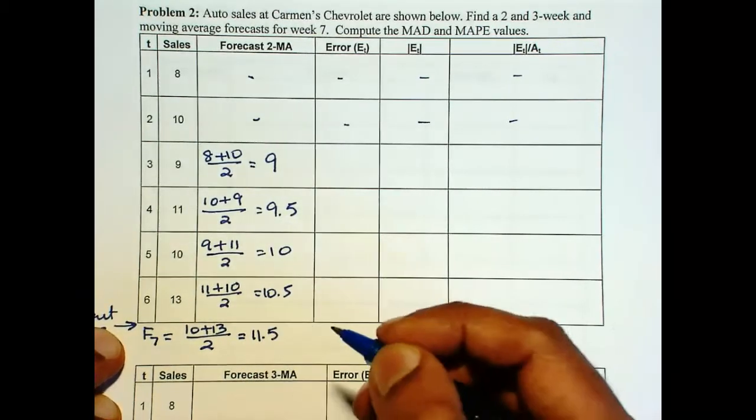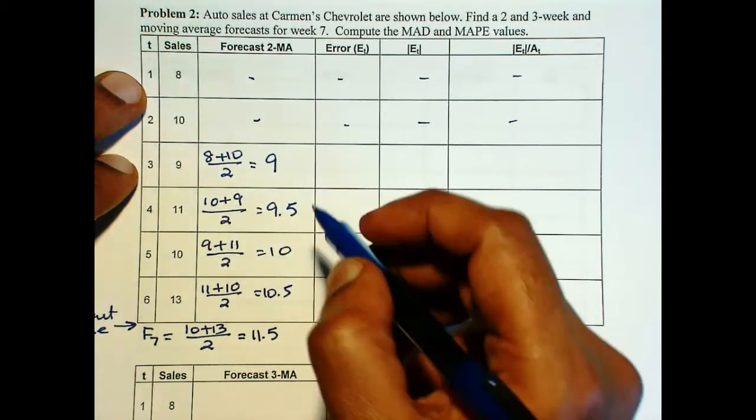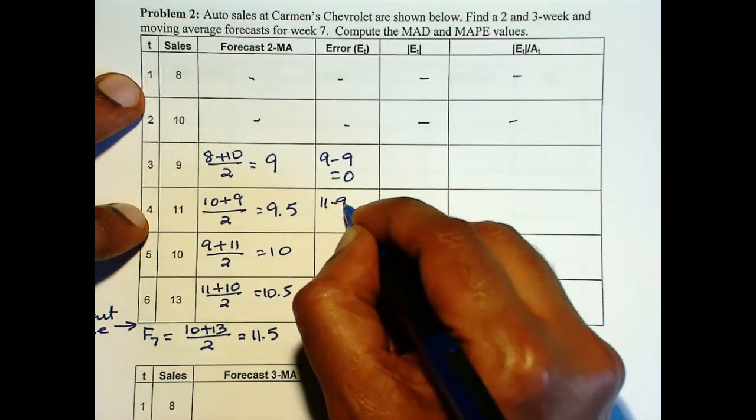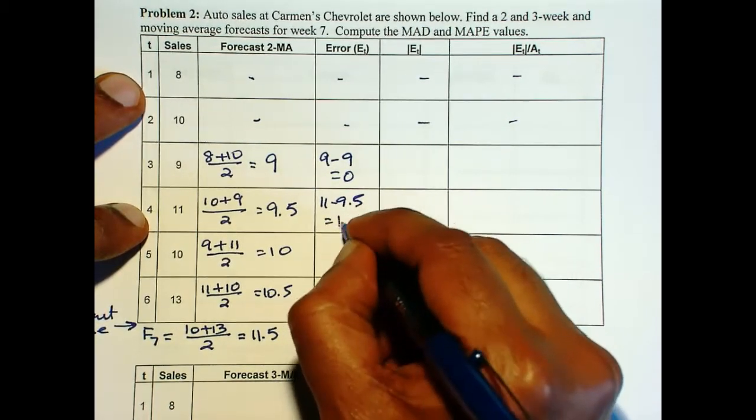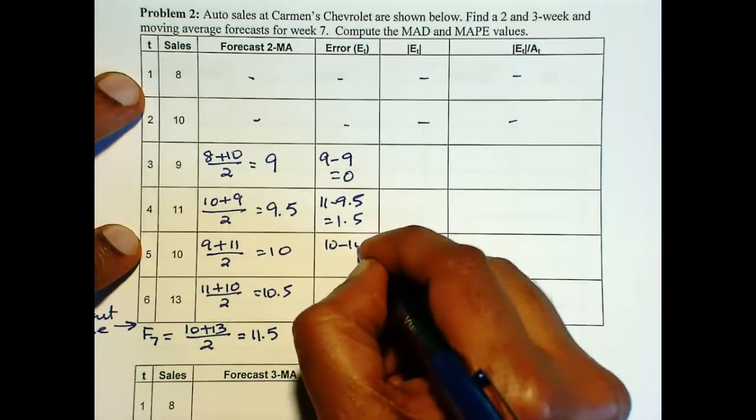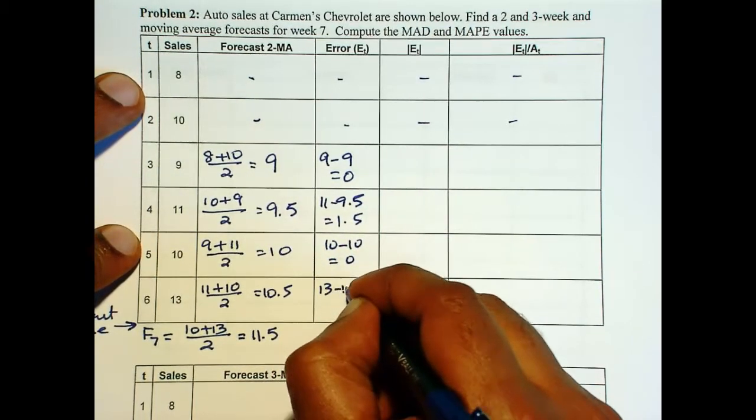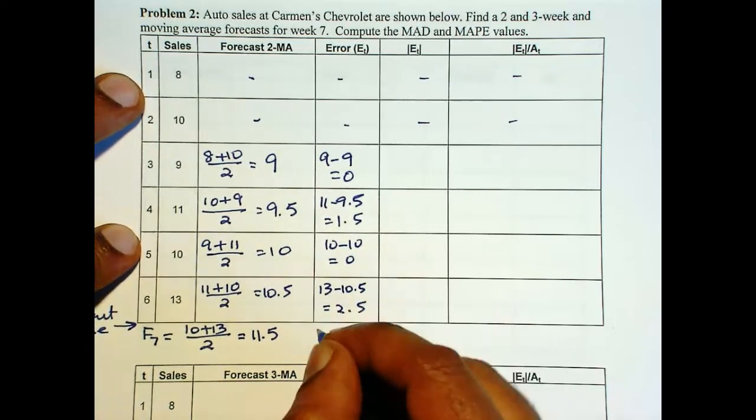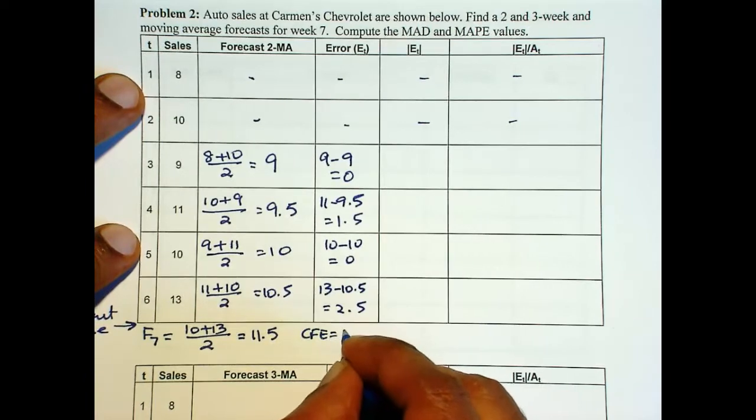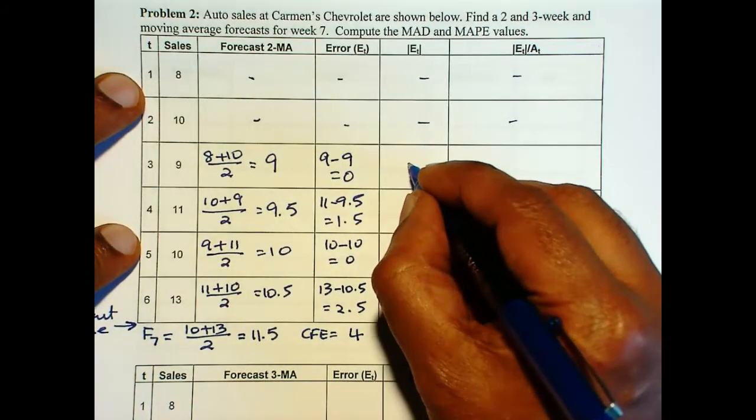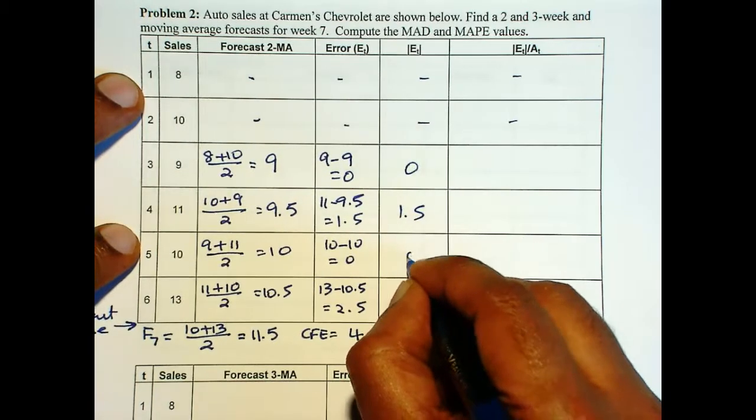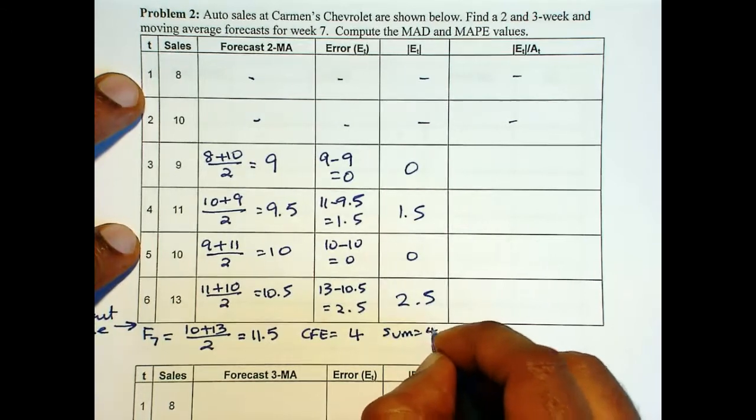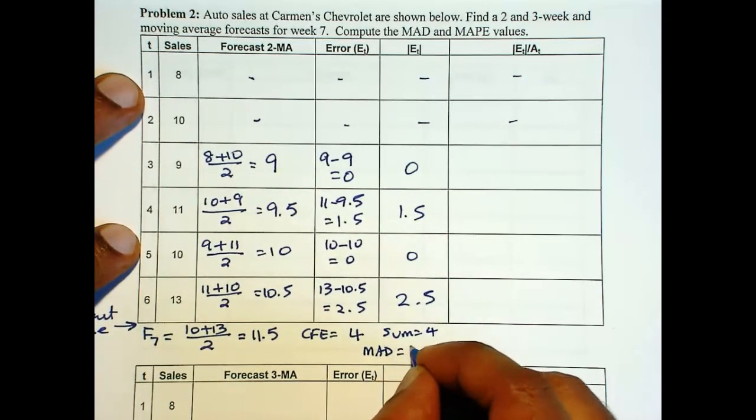So now the error is 9 minus 9 is 0, 11 minus 9.5 is 1.5, 10 minus 10 is 0, 13 minus 10.5 is 2.5. So CFE is 4. Absolute error is 0, 1.5, 0, 2.5. Sum is 4. So MAD is 4, and there are 4 errors divided by 4 is 1.